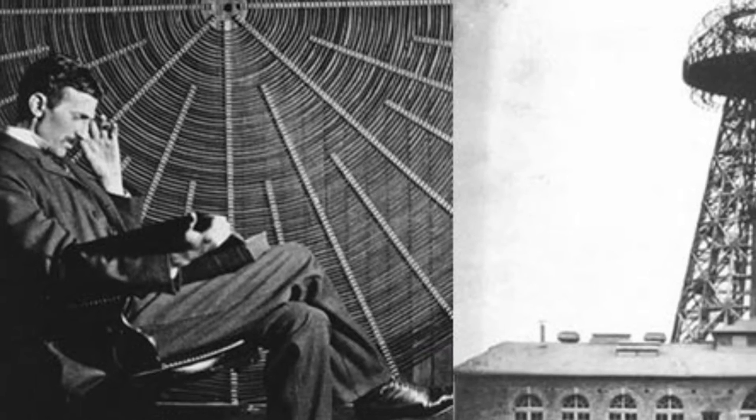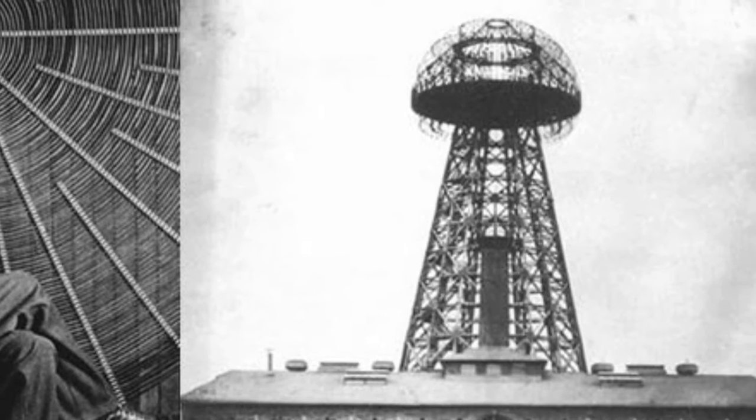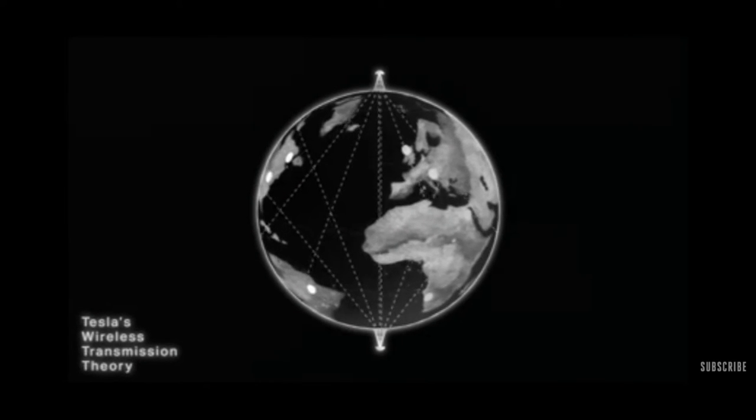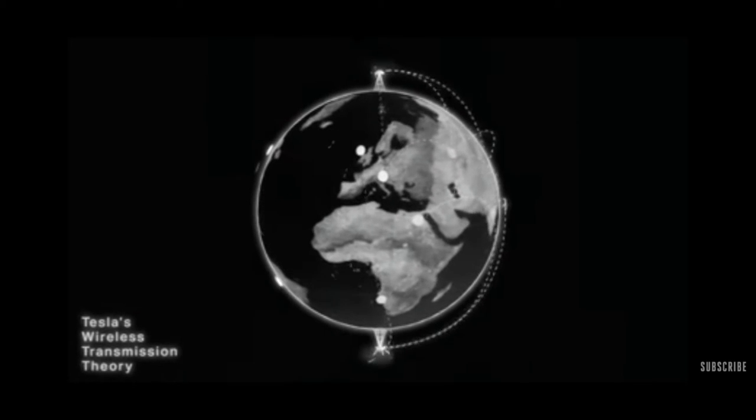The structure of the Wardenclyffe tower is very similar to the Tesla coil, but its purpose was not using electricity through the air. Rather, Tesla imagined that there would be a system of towers around the globe that would facilitate the transfer of electricity in the form of electromagnetic waves through the earth and sometimes through air in the form of lightning as well.